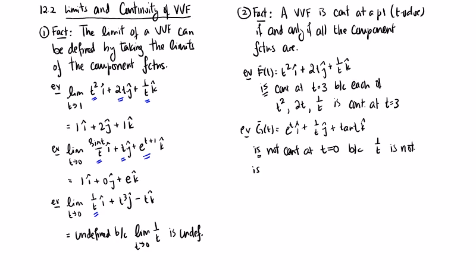And, for example, it's also not continuous at t equals pi over 2 because tangent of t isn't.